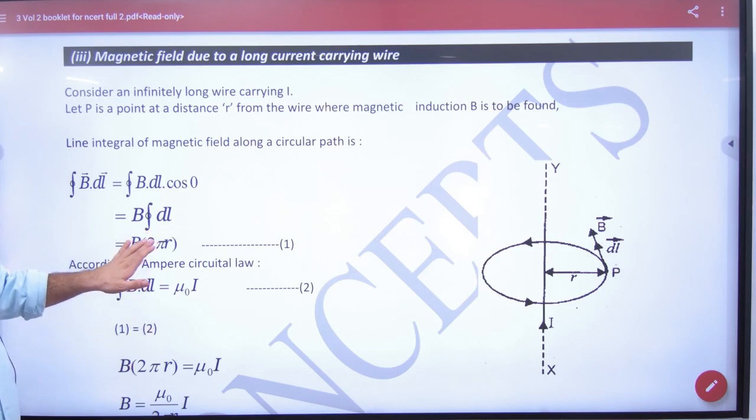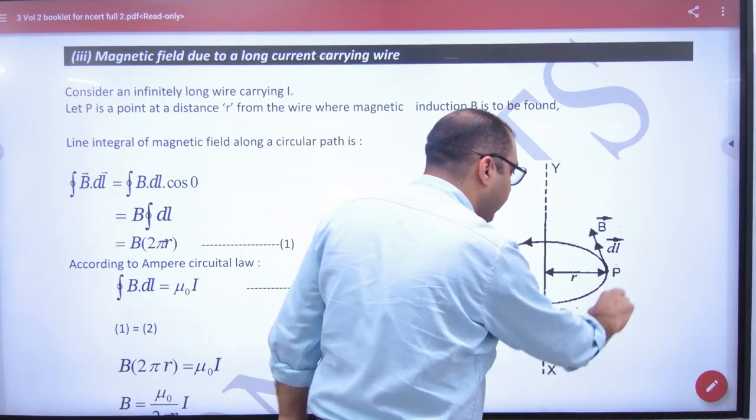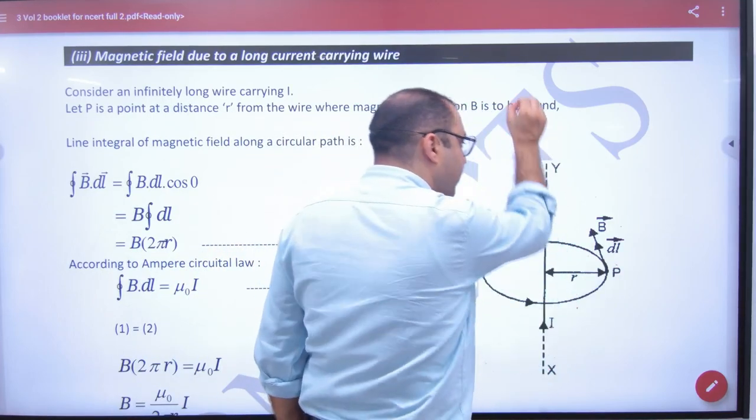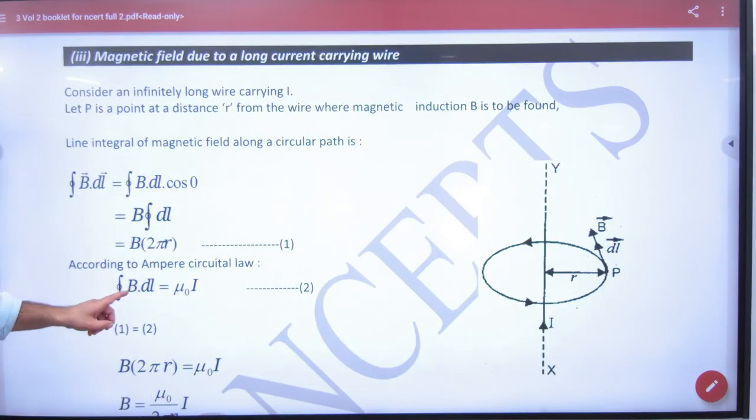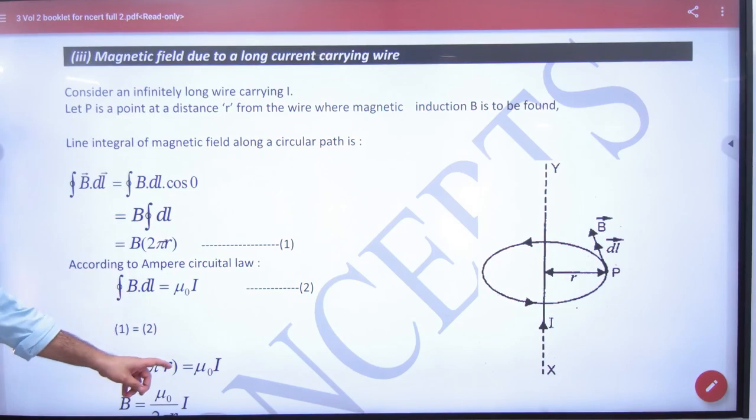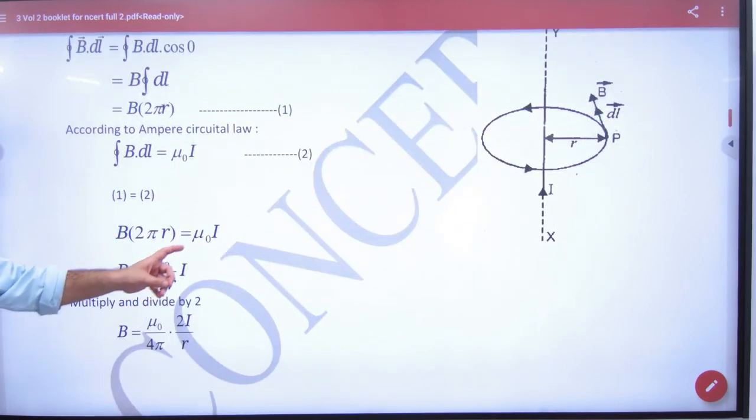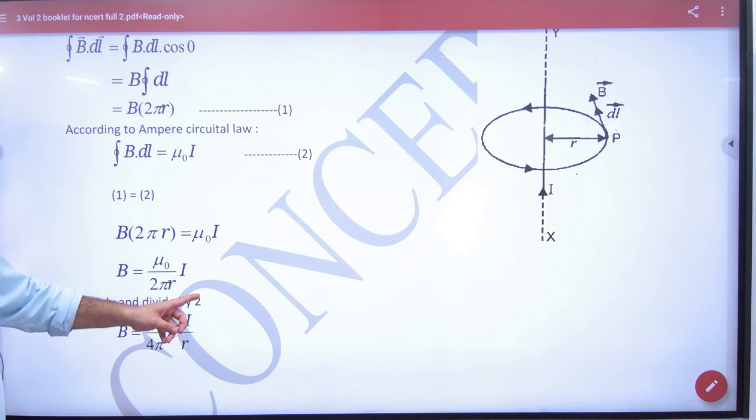So once you have the integration B into 2πr, and Ampere's Circuital Law says ∮B⋅dL equals μ₀I, you have the answer for the infinite wire.